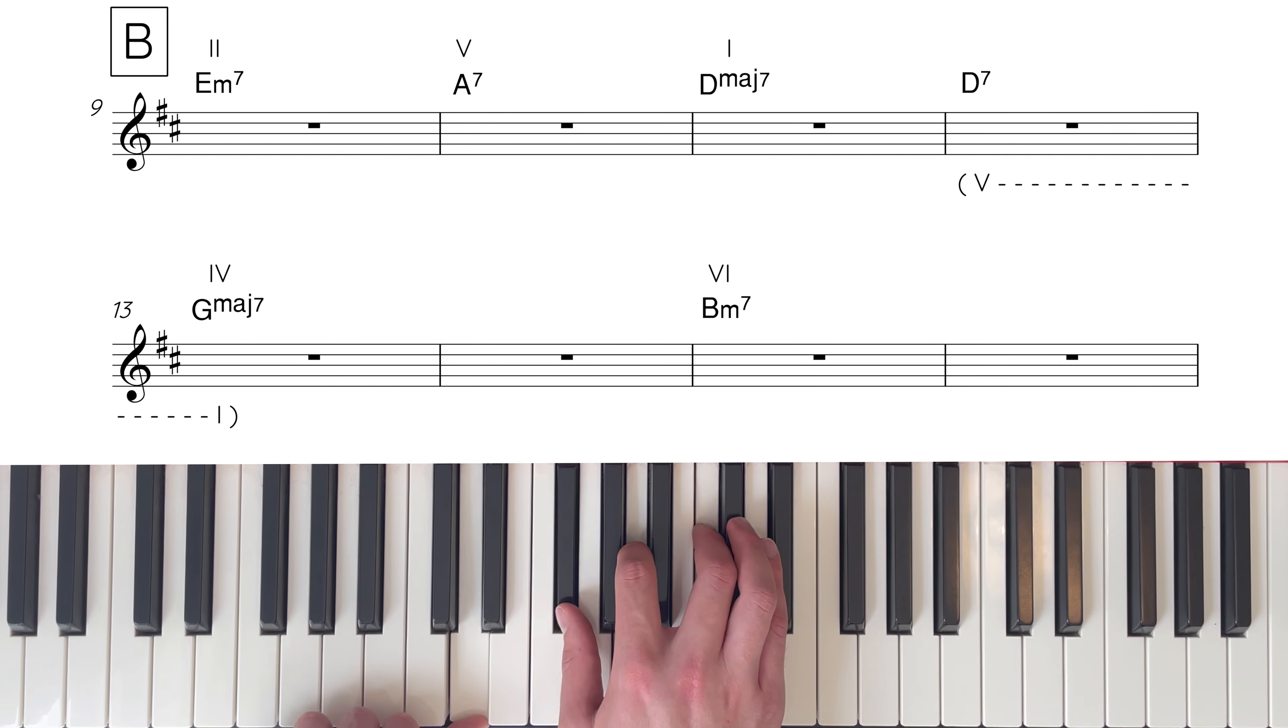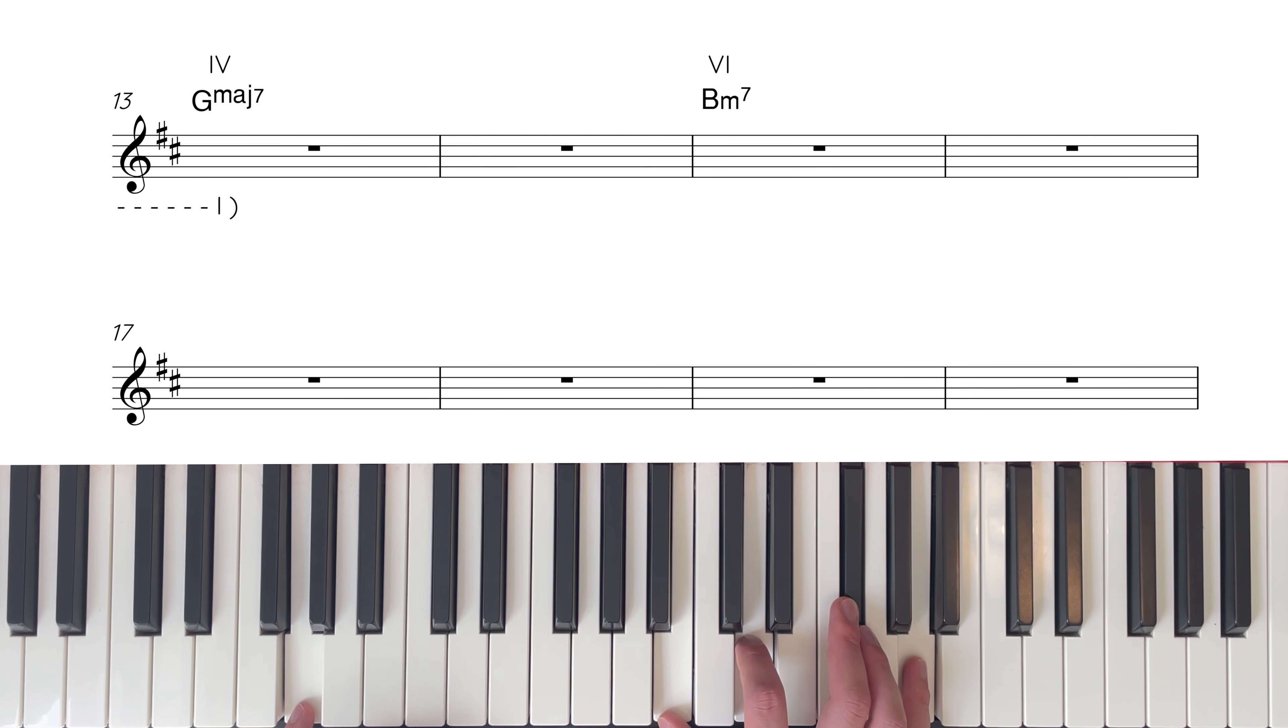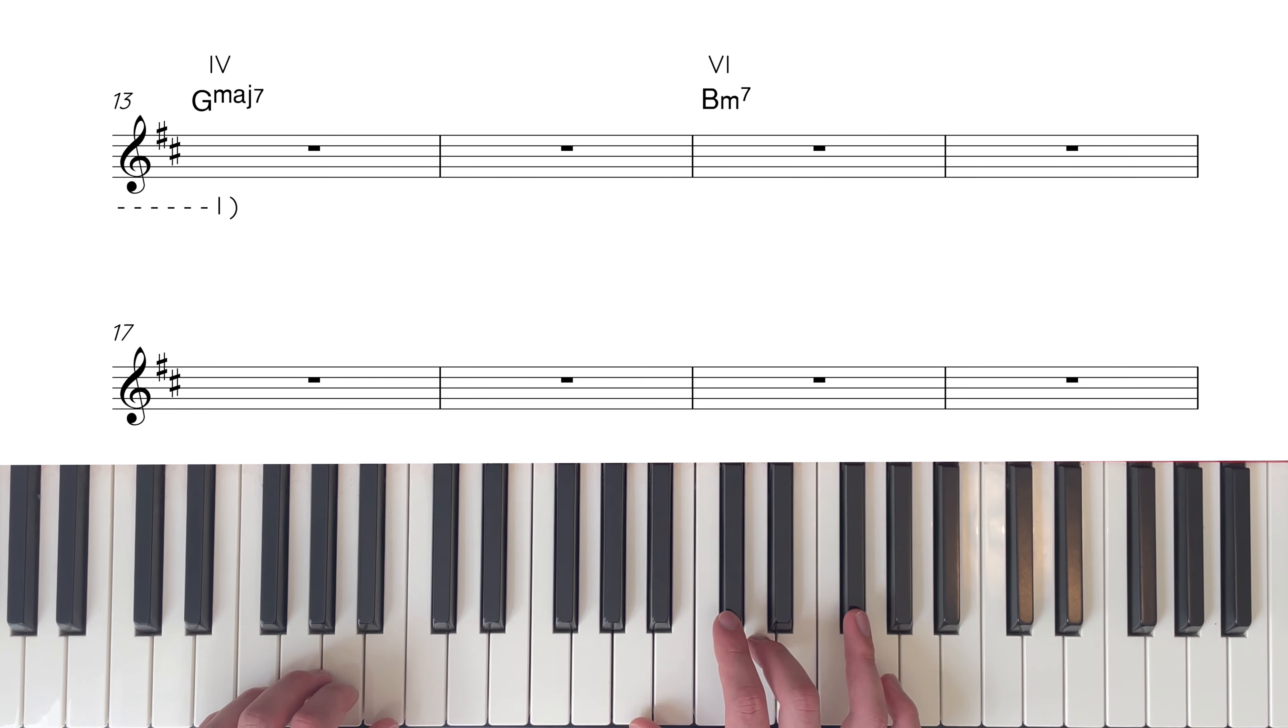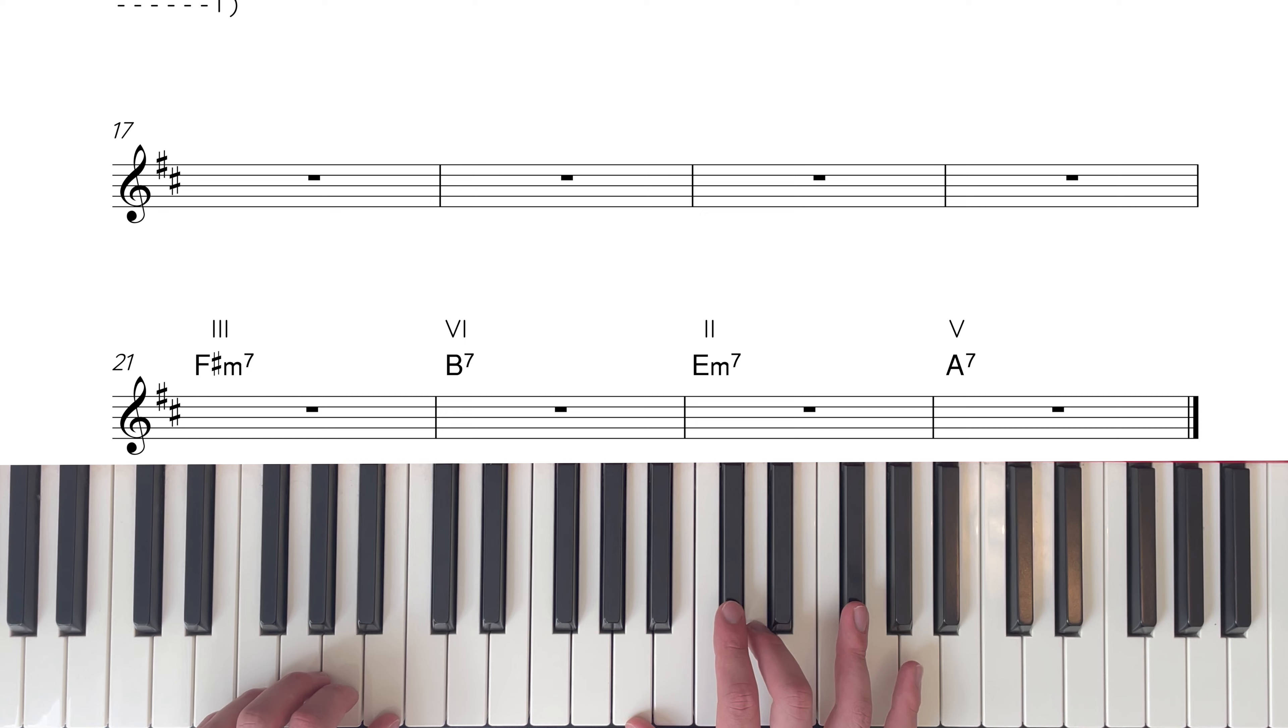Next, we move to chord 4, G major 7, and get there through a 5-1 cadence. G major 7 is the target point of the 5-1 cadence, which means D7 is the 5 chord that takes us there. We then sit on chord 4, G major 7 for two bars.